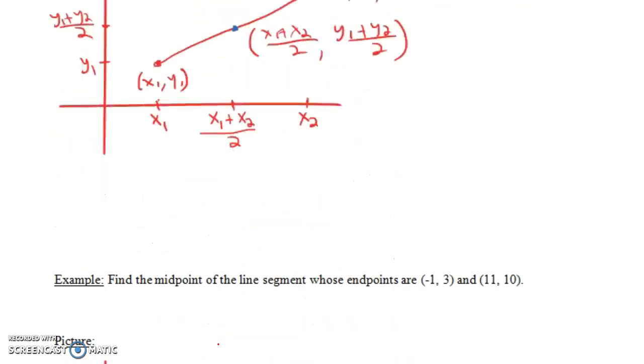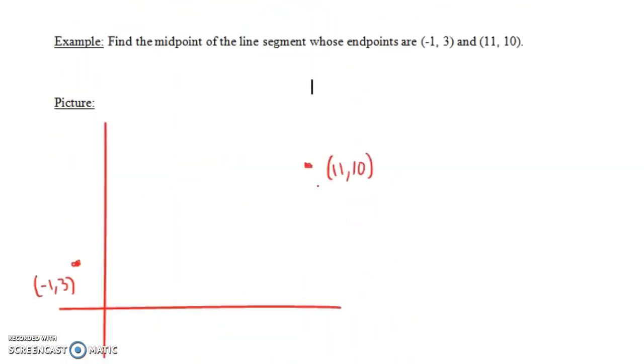All right, so let's do an example. Find the midpoint of the line segment whose endpoints are (-1, 3) and (11, 10). So I've drawn these points: (-1, 3) and (11, 10).